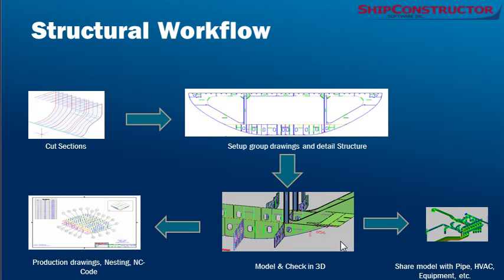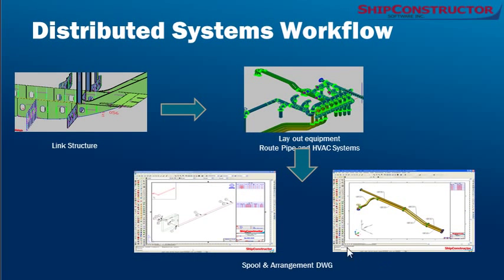There's also interference checking to validate the accuracy of your model. From that 3D model, production drawings and production codes can be produced. That structural model will also be shared with the mechanical team as a starting point for distributed systems. Their workflow commences with that structure and they can lay out equipment, route pipes, and run HVAC ducting. The production outputs from that 3D model include arrangement and spool drawings with detailed bills of materials and dimensions.